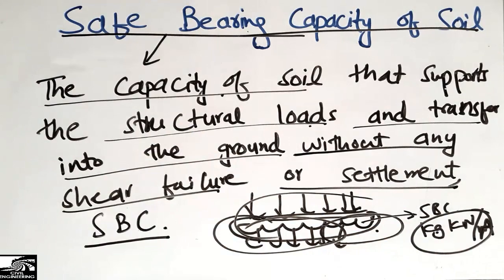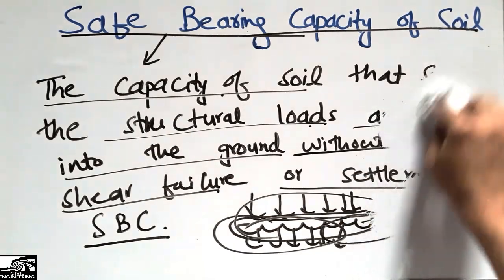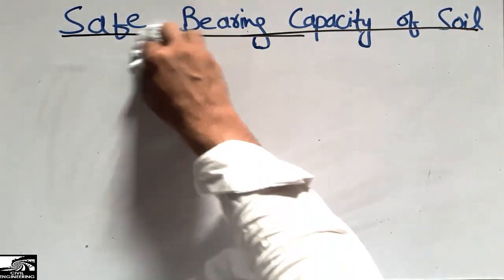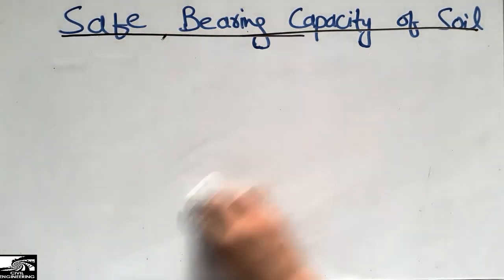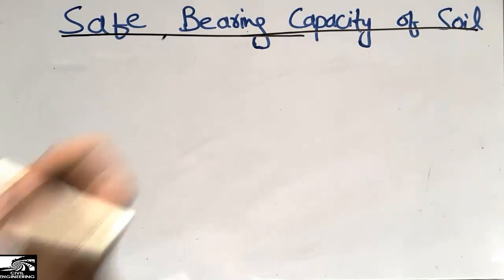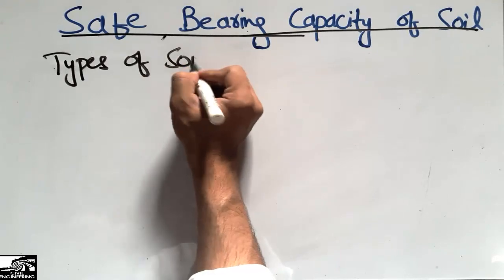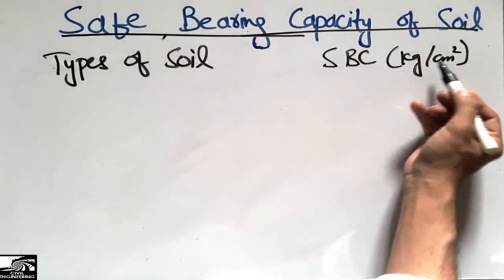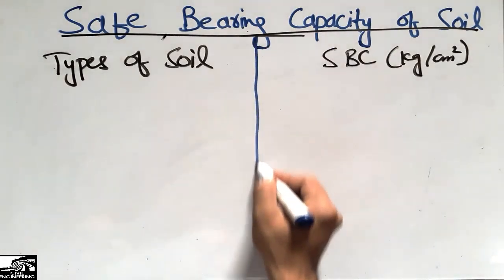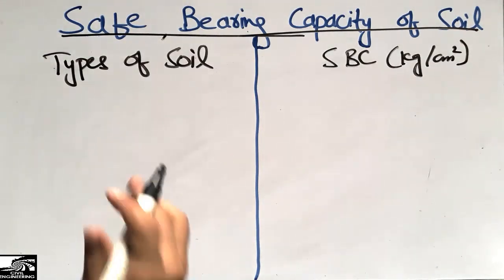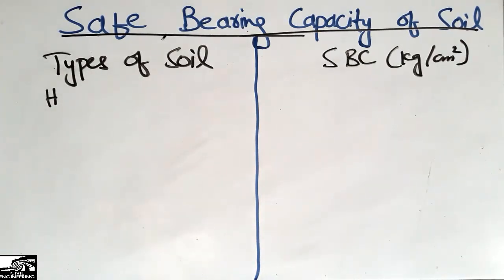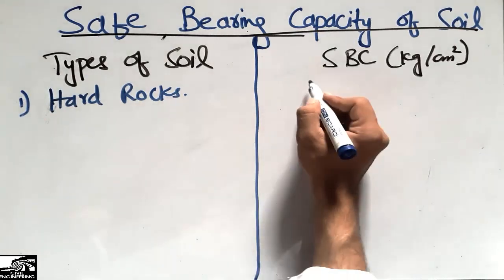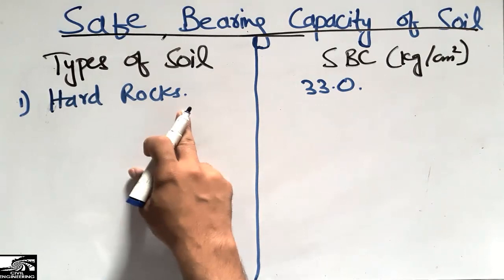The more stiff and hard the material, the more bearing capacity the soil has. I will now mention the types of soil and their safe bearing capacity in kilogram per centimeter square. The first and highest value is the hard rock. Hard rock has a bearing capacity of 33 kilogram per centimeter square — the highest value among all soil types, especially granite rocks.